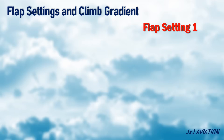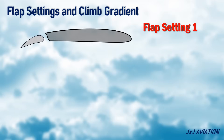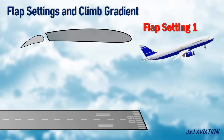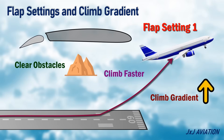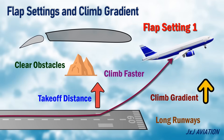Let's consider the smallest flap deflection angle as flap setting 1. When a takeoff is performed with this flap setting, the climb gradient is more. This means the aircraft will climb faster and clear obstacles easily. With this flap setting, the takeoff distance increases, so this setting is normally used on long runways.